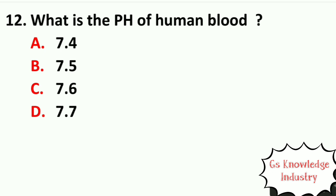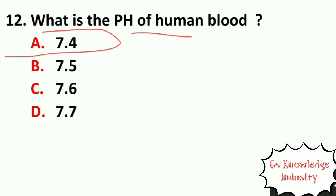Question twelve: what is the pH of human blood? Option A, 7.4. Option B, 7.5. Option C, 7.6. Option D, 7.7. The right answer is Option A — the pH of human blood is 7.4.